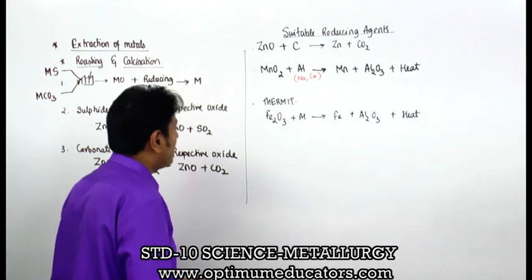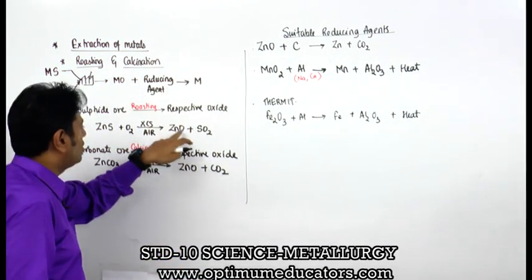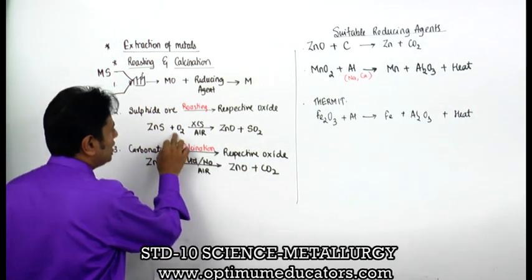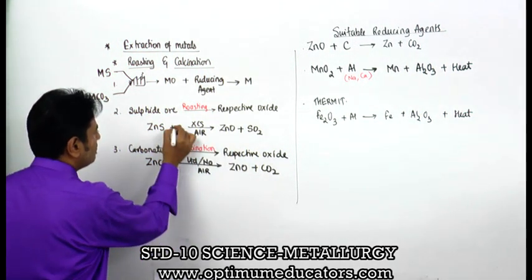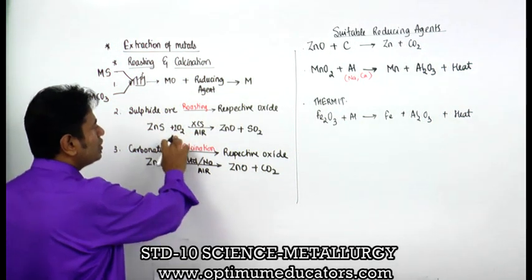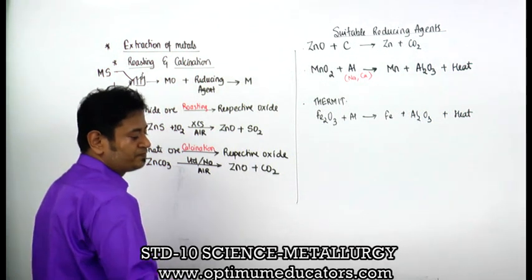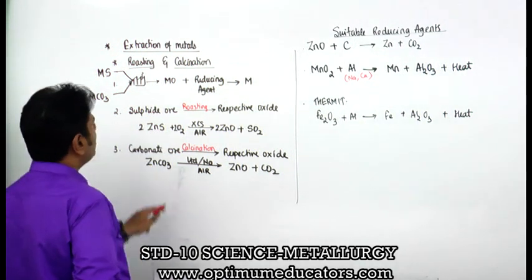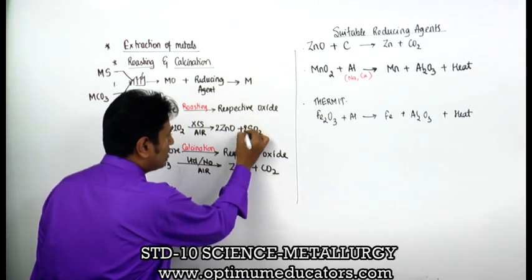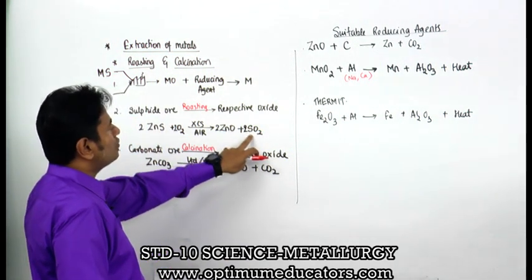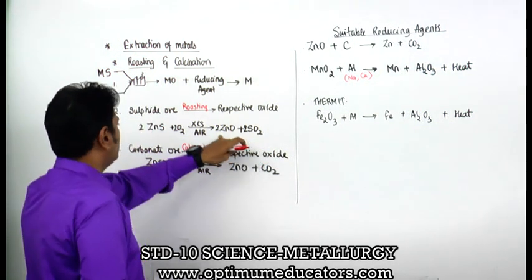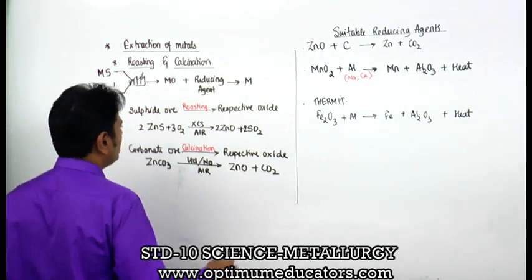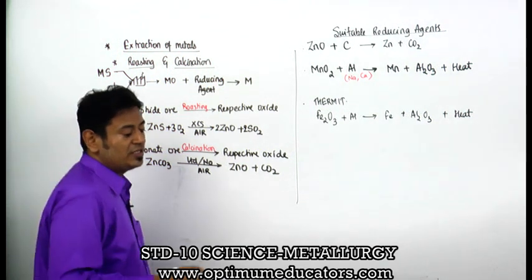Let us check the balancing. For ZnS reacted with O2: multiplying by 2 gives 2ZnS + 3O2 → 2ZnO + 2SO2. For ZnCO3: zinc carbonate giving zinc oxide and carbon dioxide is already balanced - Zn:1, C:1, O:3 gives O:1 + O:2. For ZnO + C → Zn + CO2: multiplying by 2 gives 2ZnO + C → 2Zn + CO2, balancing zinc and oxygen.